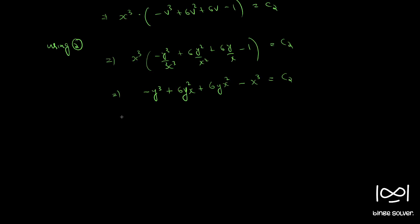Rearranging, we get x³ + y³ - 6xy² - 6x²y = c₃. This is the solution to question number 114.